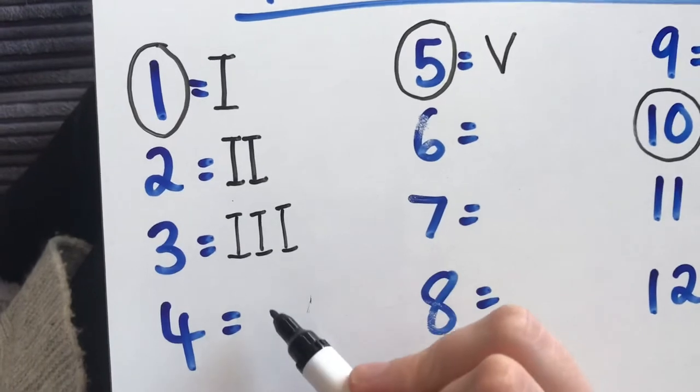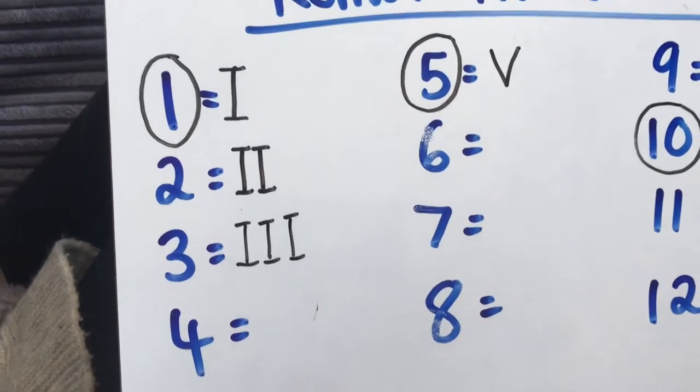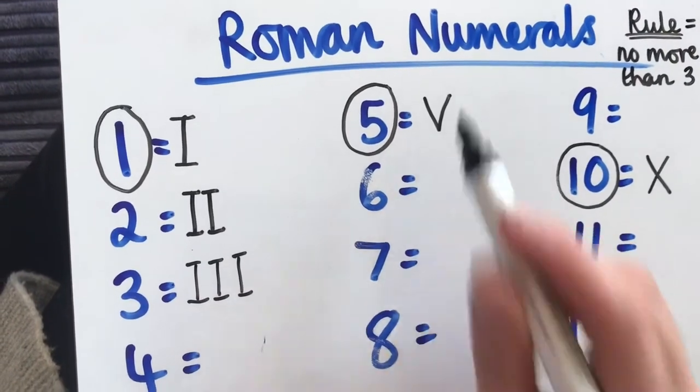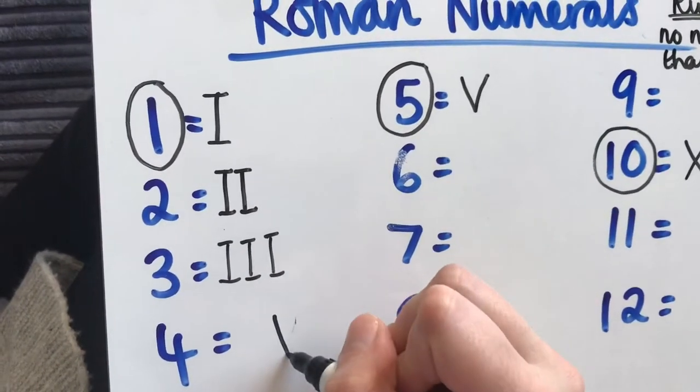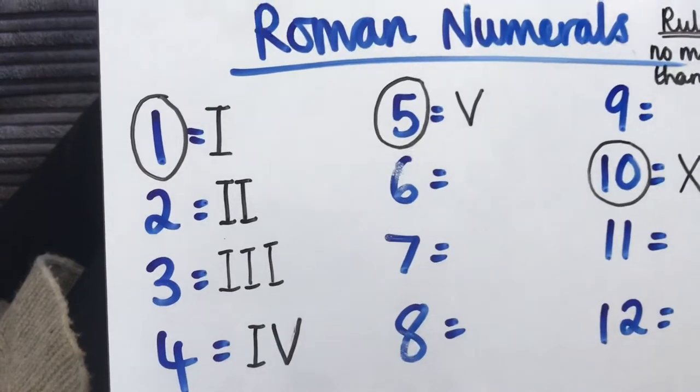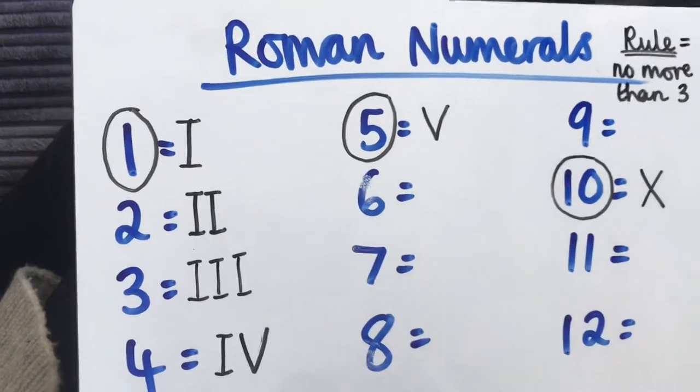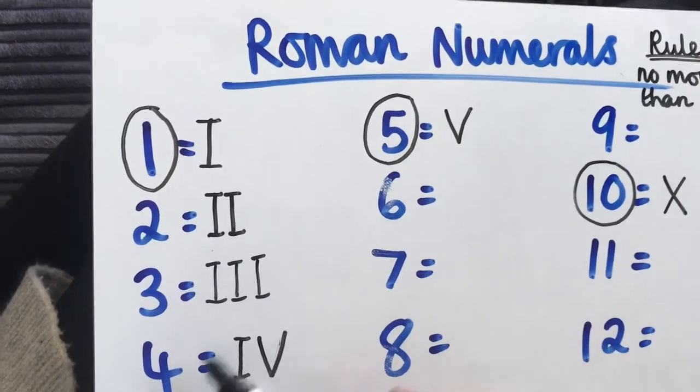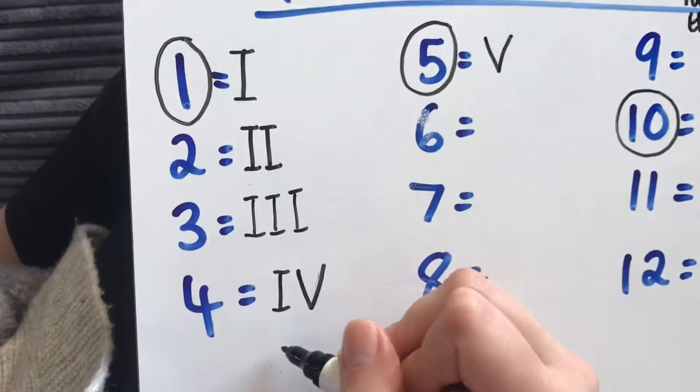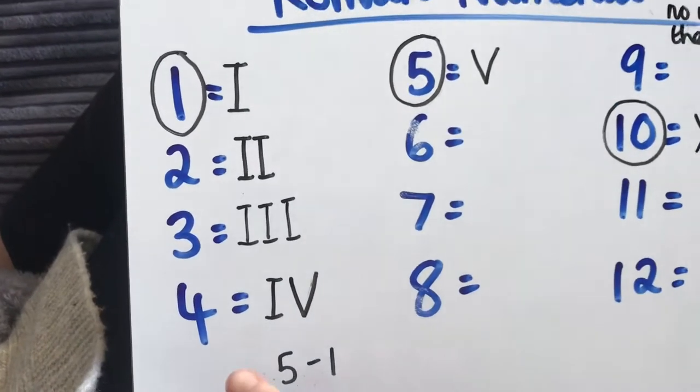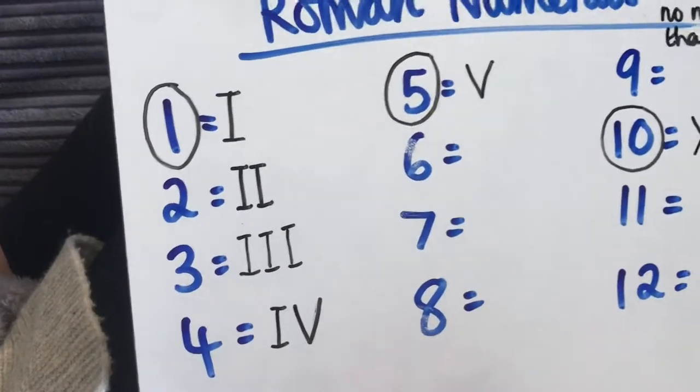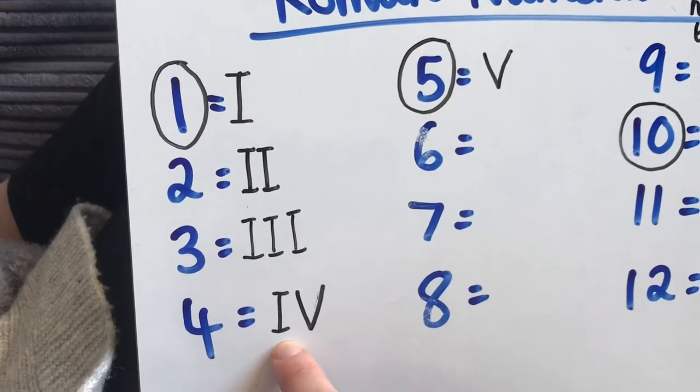So number 4 isn't going to be I-I-I-I. Look what happens. So let's jump to number 5. Number 5 is V. So number 4 is I-V, and I'm going to explain why. Number 5 is V. This means one before 5. So it's like 5 take away 1. It's one before. So 5 take away 1 is 4. So the number 4 in Roman numerals is IV.